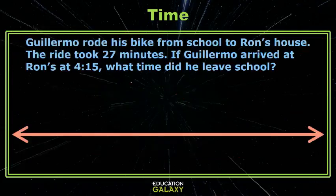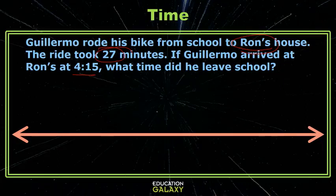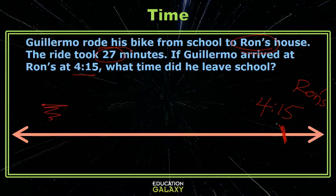Let's try another together. Guillermo rode his bike from school to Ron's house. The ride took 27 minutes. He arrived at Ron's at 4:15. So we're working from this arrival time at Ron's house at 4:15, but he left before. So I'm looking for some sort of time over here — I need to back up 27 minutes.